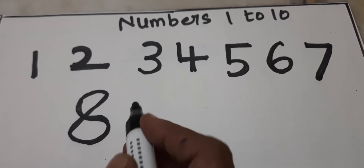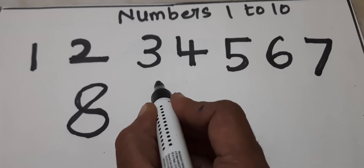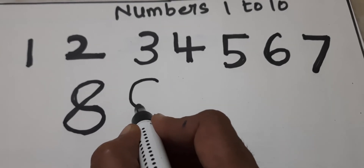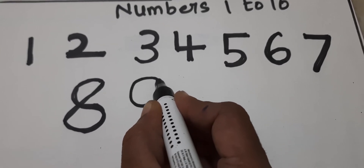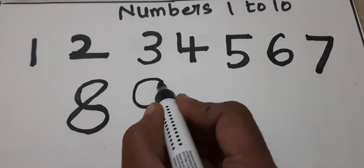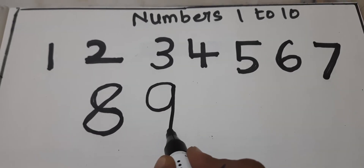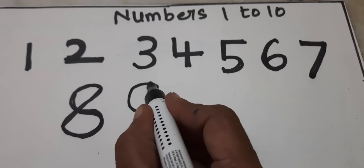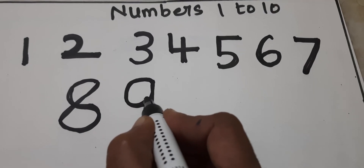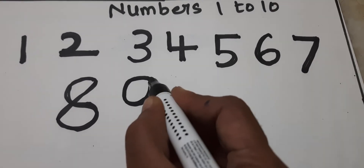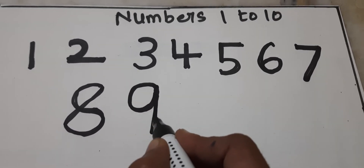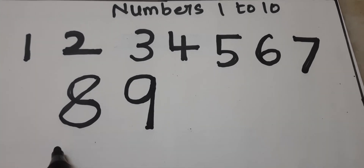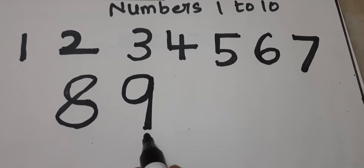9. How to write 9? We write C, then standing line — 9. We write C, then standing line. Number 9. After 9 comes 10.